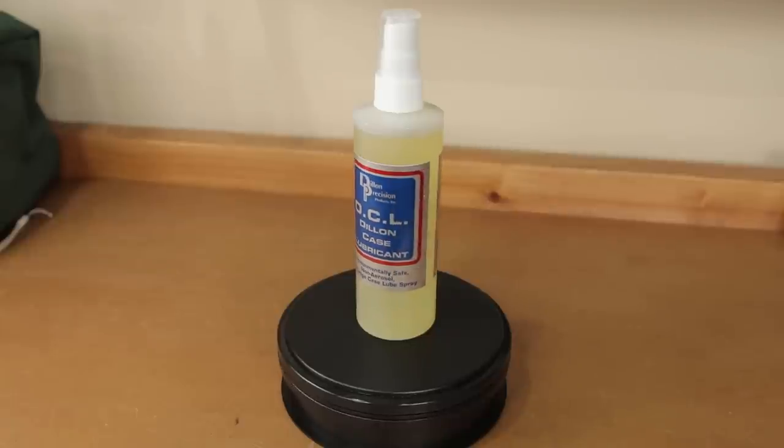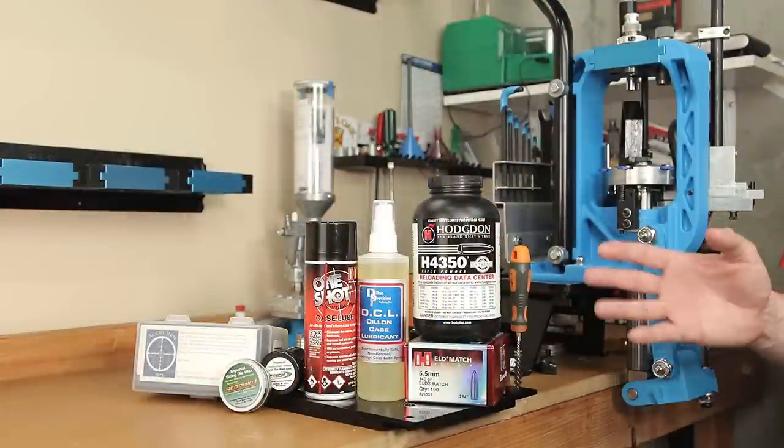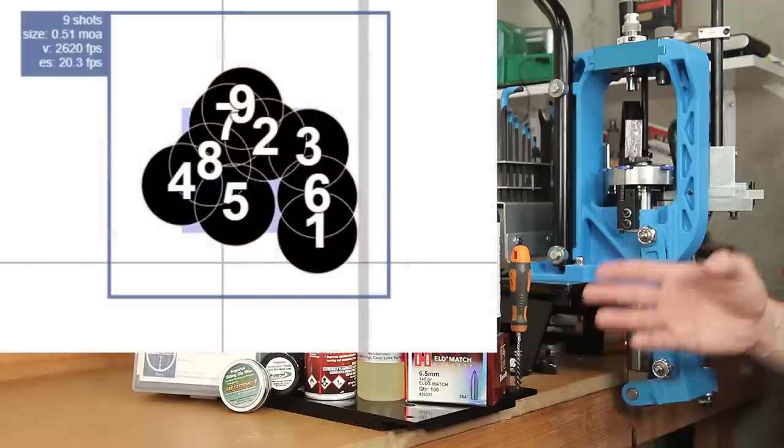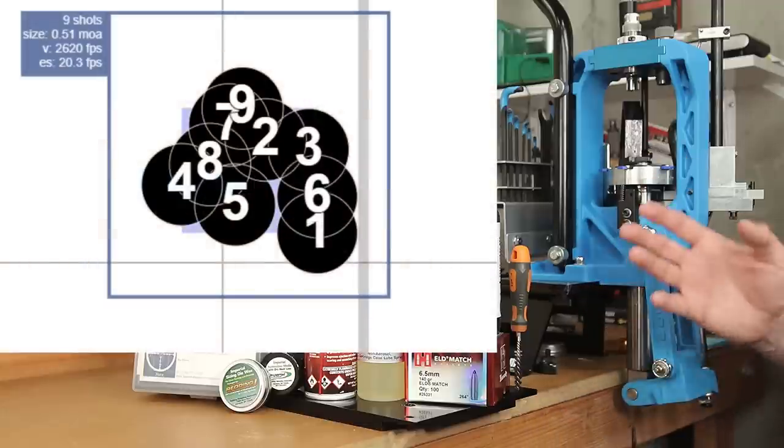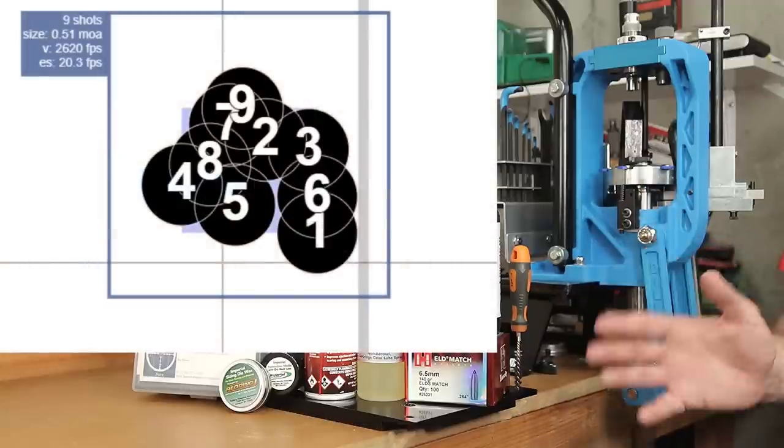We'll talk about how they differ and see if one of these products changes the way we need to process brass. For today's test we're also going to run a performance comparison in 6.5 Creedmoor to see if our standard deviations and average velocities are affected by our process.